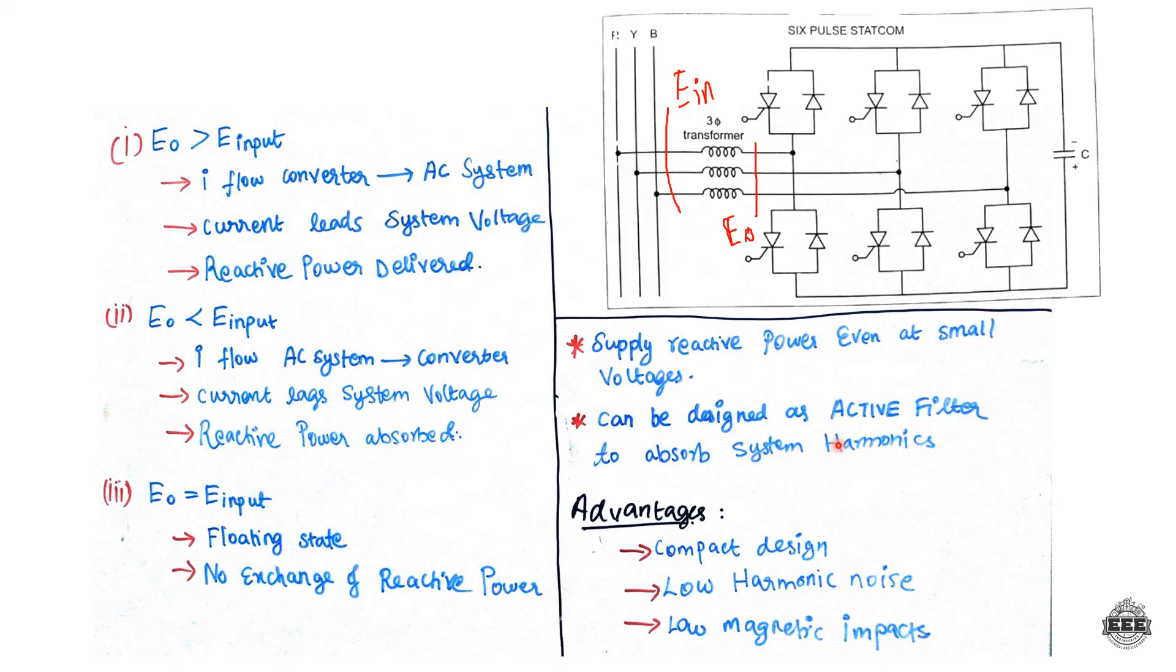Another feature is that STATCOM can be designed as an active filter to absorb system harmonics in the power line.